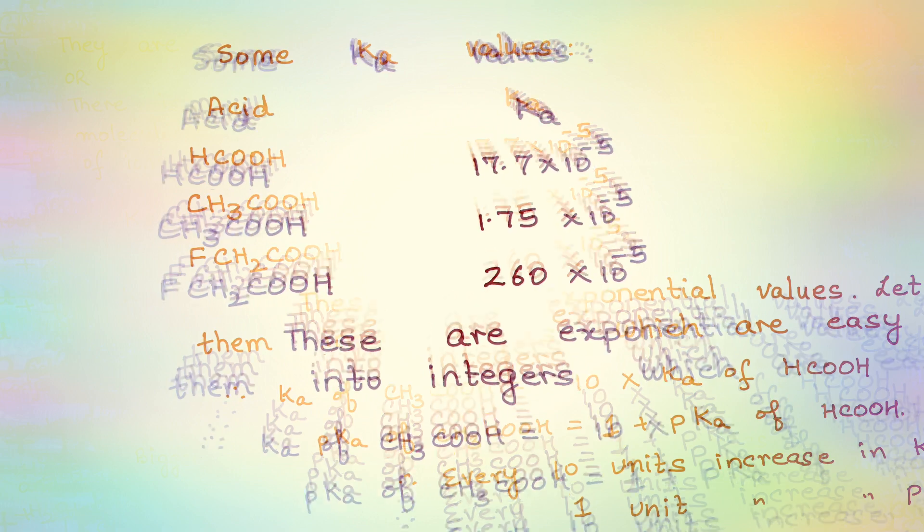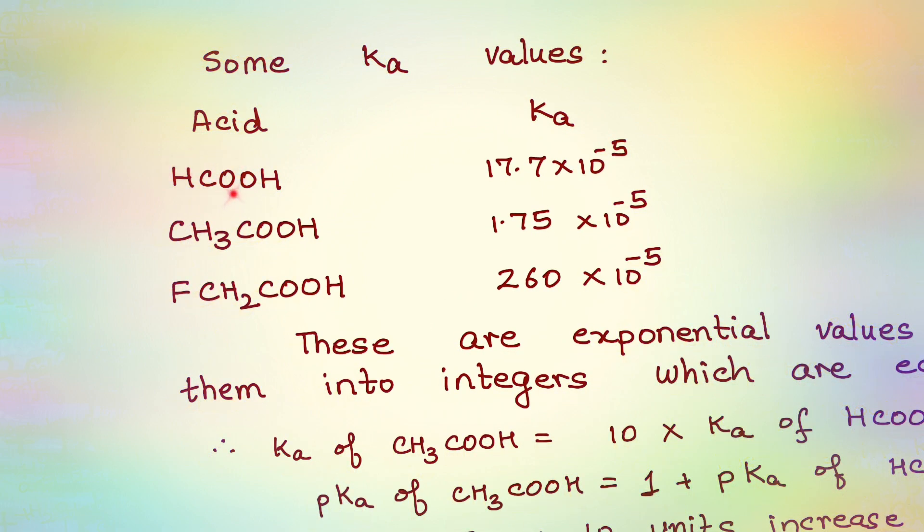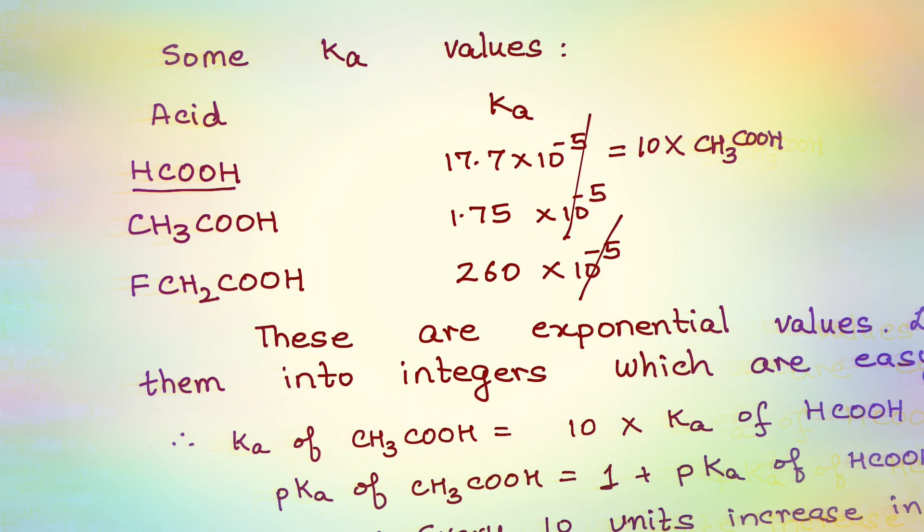Look at these values which I have jotted down for you. HCOOH, which is formic acid or methanoic acid, Ka value is 17.7 × 10-5. Acetic acid or ethanoic acid is 1.75 × 10-5. So if I just ignore the exponential values which are the same, you can very clearly see that formic acid is 10 times more acidic than acetic acid or ethanoic acid, roughly. Same way compare fluoroacetic acid, this is 260. Again if I ignore the exponential value because it is the same, 10-5, you will find that fluoroacetic acid is even more acidic than acetic acid.